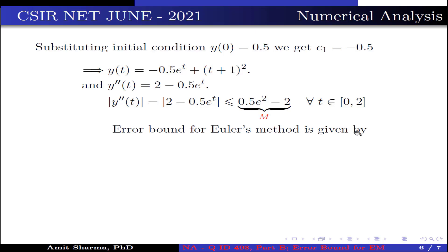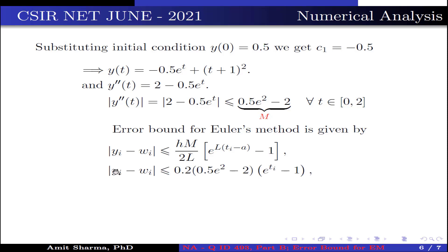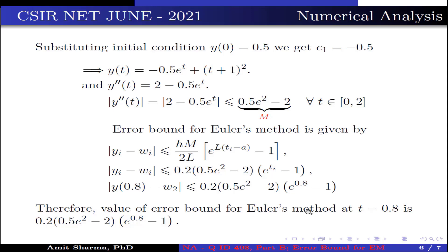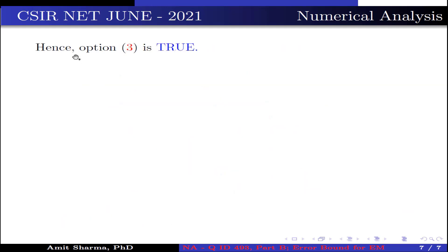The error bound for Euler's method is |yᵢ − wᵢ| ≤ (hM)/(2L) × (e^(L(tᵢ − a)) − 1). Substituting all values, we get |yᵢ − wᵢ| ≤ 0.2 × (0.5e² − 2) × (e^tᵢ − 1). The error bound at t = 0.8 is |y(0.8) − w₂| ≤ 0.2 × (0.5e² − 2) × (e^0.8 − 1). Therefore the answer is option 3.